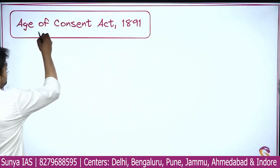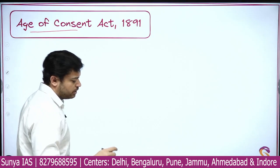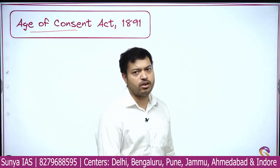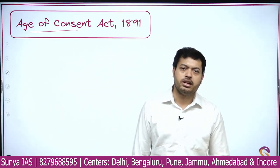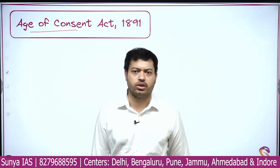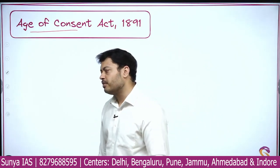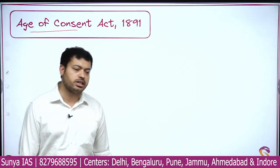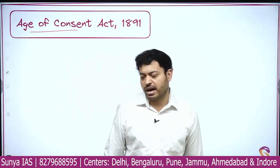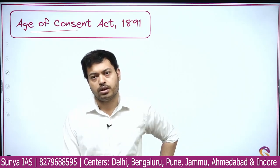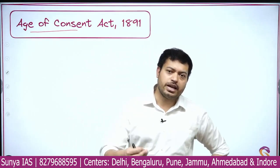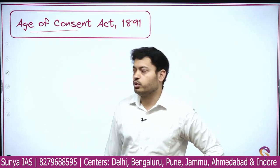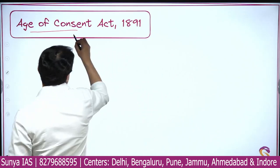The Age of Consent Act 1891 has already been asked in the examination, so serious aspirants must have some idea about it. In basic terms, you can remember that the Age of Consent Act made sure the minimum age of a girl child for marriage had to be 12 years. But you need to understand where it came from — two cases happened in the 1880s.